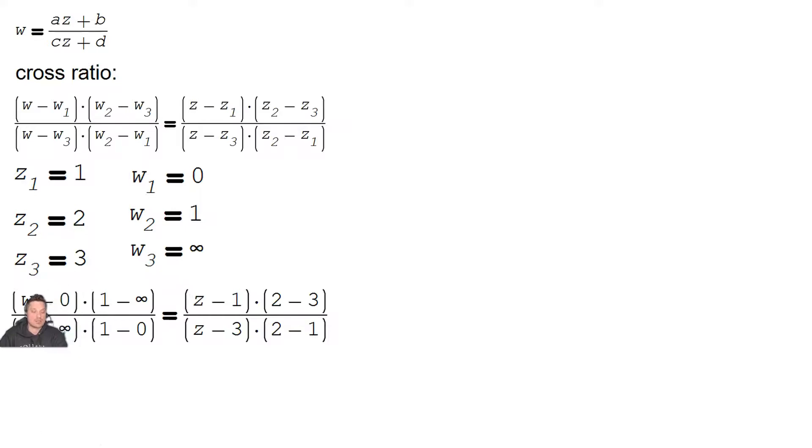Okay, take a look. So this becomes W minus 0, and then 1 minus infinity. This replacing, and then W minus infinity on the bottom, and then 1 minus 0 in that position, just making replacements on the left side for the Ws. On the right side, I have Z minus 1, 2 minus 3, Z minus 3, and then 2 minus 1. So making replacements for each Z with a subscript on it on the right side.